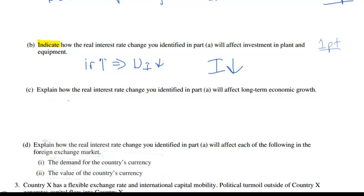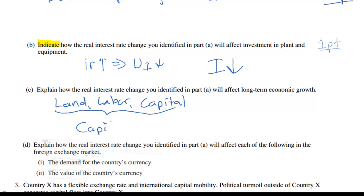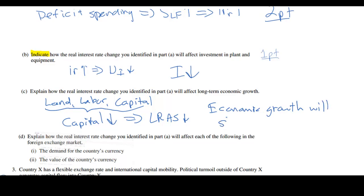The main source of economic growth is the availability and quality of land, labor, and capital. When investment spending decreases, capital will decrease — there will be less capital in the economy over time as interest rates increase and the quantity of investment decreases. If the capital stock diminishes over time, then long-run aggregate supply will decrease, meaning economic growth will be slower and will not achieve the same potential it would at higher levels of investment. So we can say that economic growth will slow down because investment decreases, there will be less capital stock in the nation, and therefore the growth rate will slow.